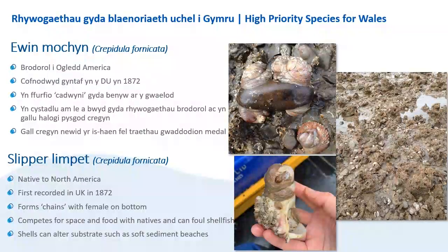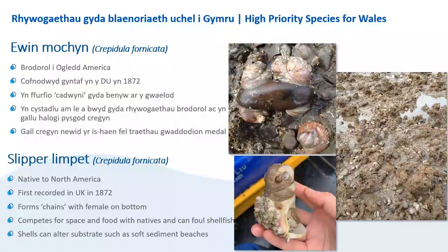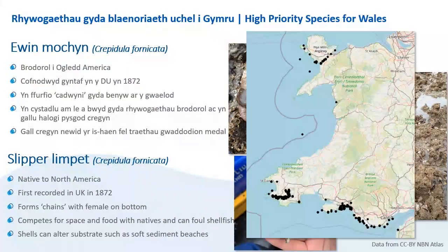We're now going to go over a few examples of marine INNS that have been assessed as high priority for monitoring and management in Wales. The slipper limpet, Crepidula fornicata, is native to North America and was first recorded in the UK in 1872. It is a distinctive species forming chains of multiple individuals with larger females on the bottom of the chain and smaller males attaching above. The slipper limpet can compete with native species for space and food and can foul shellfish, decreasing their survival. They can also alter substrates, for example covering previously soft sediment areas with their hard shells. In some areas thick layers of slipper limpet shells can blanket the seabed with densities exceeding 2,000 individuals per metre squared. Populations have been found throughout Wales, particularly on the southern coast by Milford Haven and Swansea, and in the northwest in the Menai Straits.